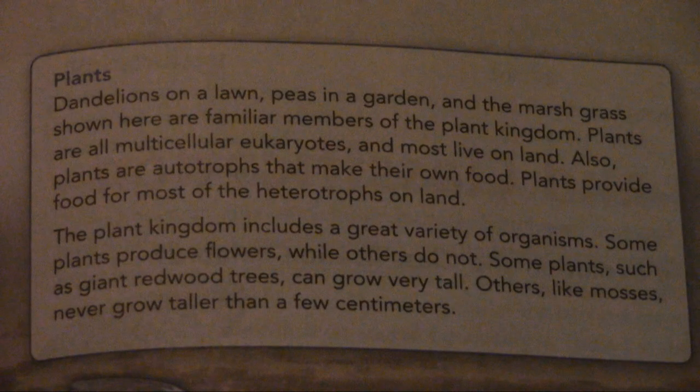Plants. Dandelions on a lawn, peas in a garden, and marsh grass are familiar members of the plant kingdom. Plants are all multicellular eukaryotes, and most live on land. Plants are autotrophs that make their own food. Plants also produce food for most of the heterotrophs on land. The plant kingdom includes a great variety of organisms. Some plants produce flowers, while others do not. Some plants, such as giant redwood trees, can grow very tall. Others, like mosses, never grow taller than a few centimeters.